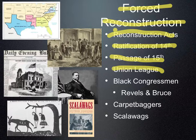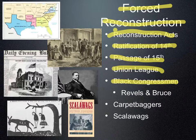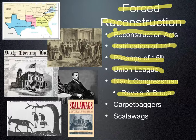Since we now have Black men voting, we end up getting Black congressmen elected. It is during Reconstruction that we see our first Black congressmen. The first two are U.S. Senators from the state of Mississippi: Hiram Revels — R-E-V-E-L-S — and Blanche Bruce. Last names are typically all you need to know. Hiram Revels and Blanche Bruce became the first Black congressmen elected — senators from the state of Mississippi.